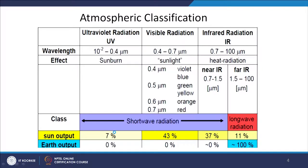The energy distribution of the sun is mostly centered around visible and infrared. If we look at how much energy is stored in which part of the spectrum, 7% of solar energy is in the ultraviolet region, 43% is in the visible region, nearly 37% in near infrared, and 11% in far infrared. So in total, 48% is in the infrared region and 7% is in the ultraviolet region.